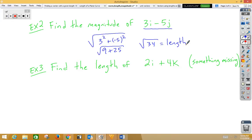In example three, we find the length of 2i plus 4k. Notice there's something missing. We've got i, j, k form, so this is a three-space vector, and the j term is missing.